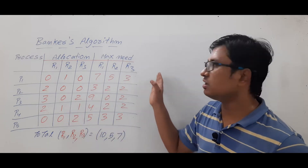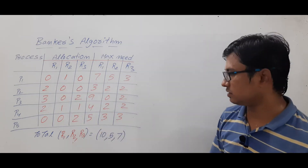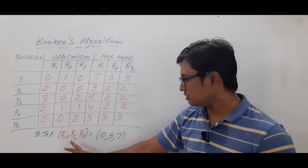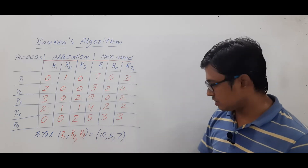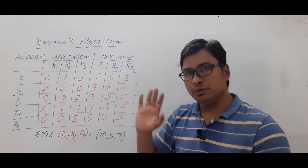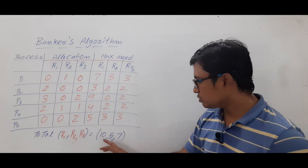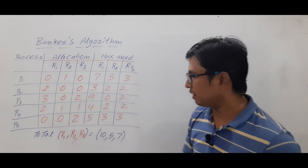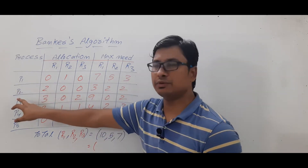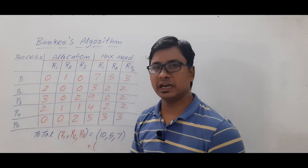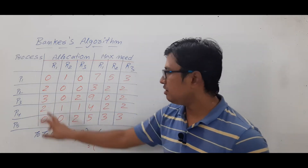From the allocation and max need, we can find the future need or requirement for each process. Before allocating resources, we had 10 instances of R1, 5 of R2, and 7 of R3. Out of those, two instances of R1 have been allocated to P2, three to P3, and two to P4 — totaling seven instances of R1 already allocated.